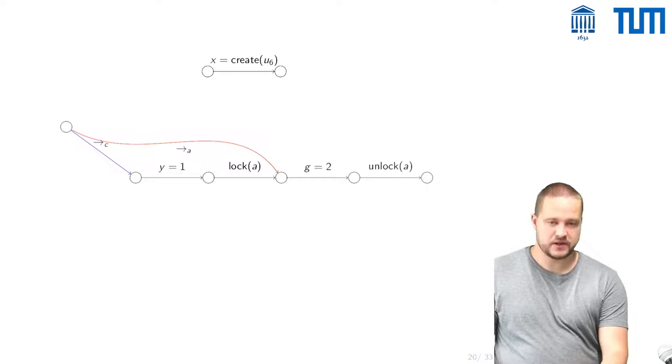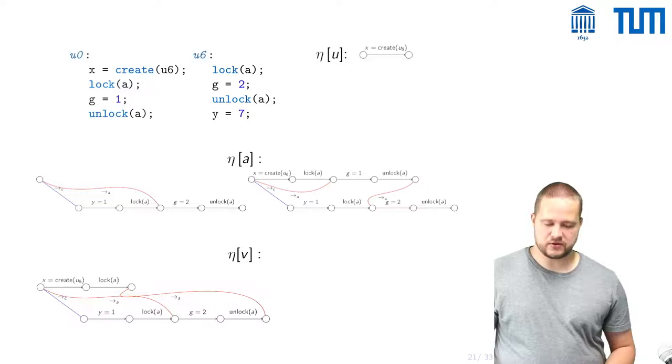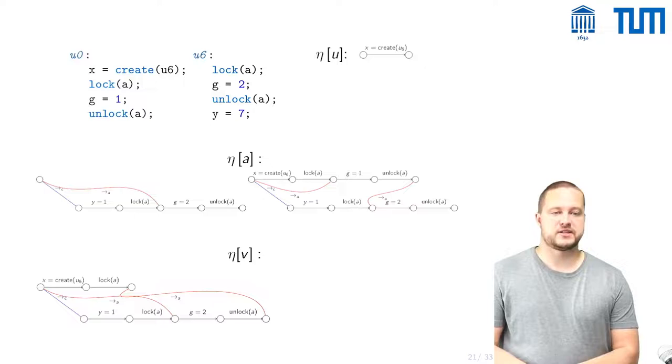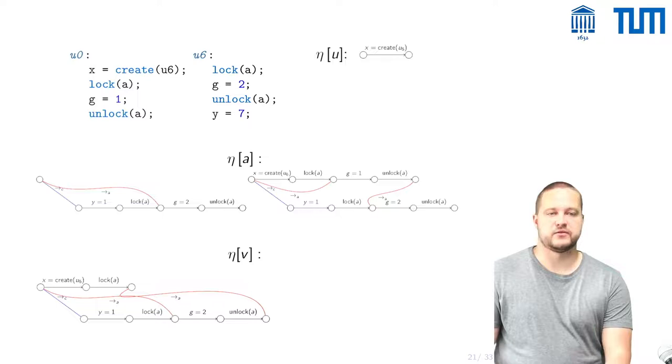For example this one you can combine those two and then end up with a new local trace. This would be a resulting local trace. However not all of them are compatible so for example the second local trace that appears here one could not combine them so it would also not appear in the result here.